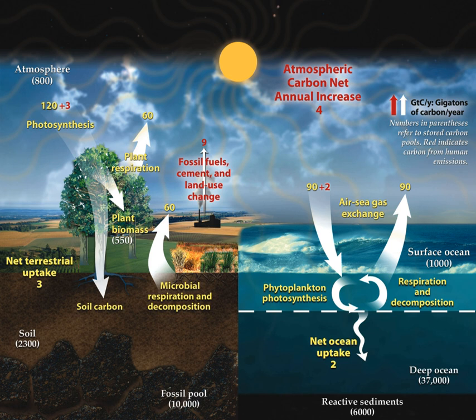On 12 November 2015, NASA scientists reported that human-made carbon dioxide continues to increase, reaching levels not seen in hundreds of thousands of years. Currently, the rate of carbon dioxide released by the burning of fossil fuels is about double the net uptake by vegetation and the ocean.